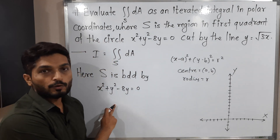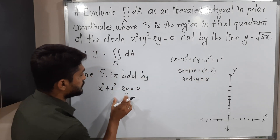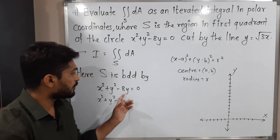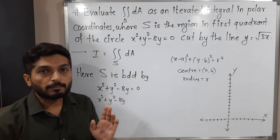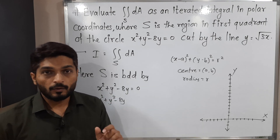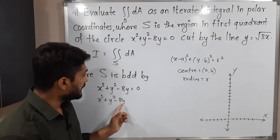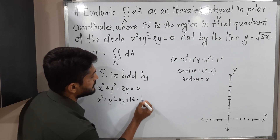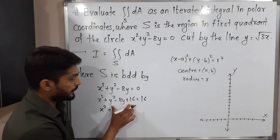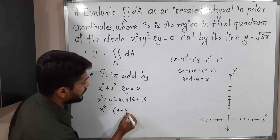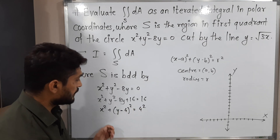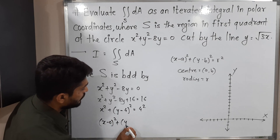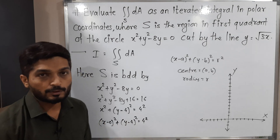I will try to express this equation of circle in standard form. There is one simple technique to adjust the bracket square: whatever the multiple of y, take its half and take its square. Multiple of y is 8, its half is 4 and its square is 16. So let us add 16 to both sides. We get x² + (y - 4)² = 16, which gives us a bracket square equal to 16, meaning 4 squared.